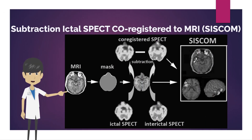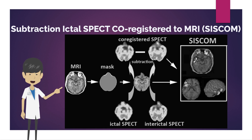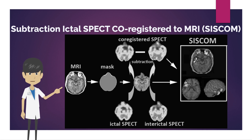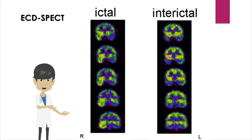Subtraction ictal SPECT co-registered to MRI — abbreviated SISCOM — is a useful imaging method for detecting epileptic foci. Brain perfusion SPECT during the interictal phase and during the ictal phase are superimposed on the MRI of the same patient. After normalizing the SPECT counts, a difference image is created by subtracting the interictal SPECT from the ictal SPECT. A standard deviation image is created from the difference image, and regions above the threshold are extracted and superimposed.